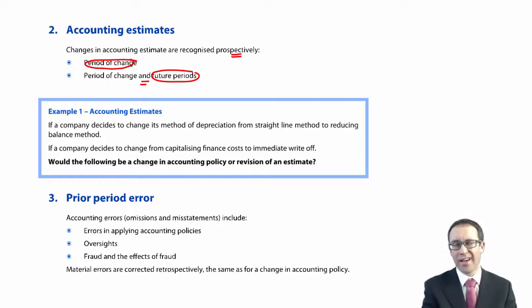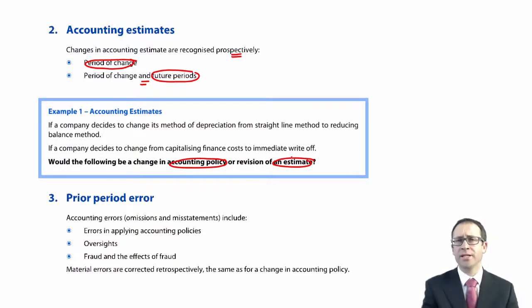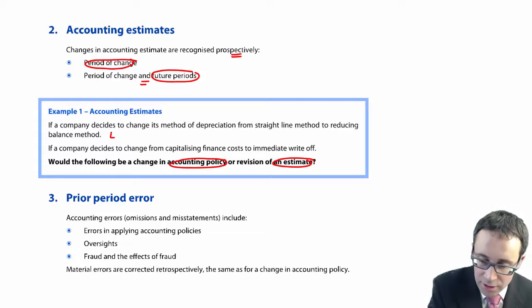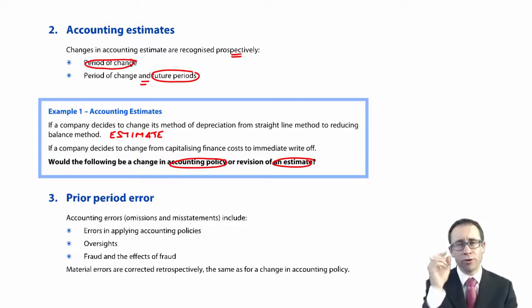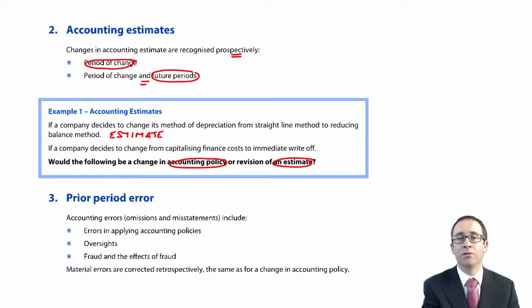So the example: would the following be a change in accounting policy or a change in an estimate? A change in accounting policy involves a change in measurement, recognition, or presentation. First example: if a company decides to change its depreciation method from straight line to reducing balance — remember, that is not a change in accounting policy. It is a change in accounting estimate. The policy is to depreciate. We're not changing the presentation, recognition, or measurement — we're still measuring the full cost of the asset through profit or loss. We're just estimating a different way of showing it.